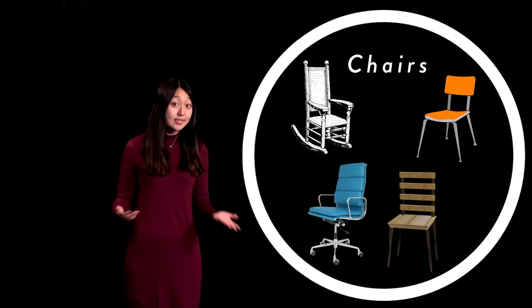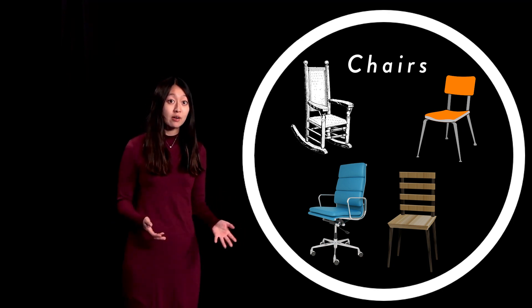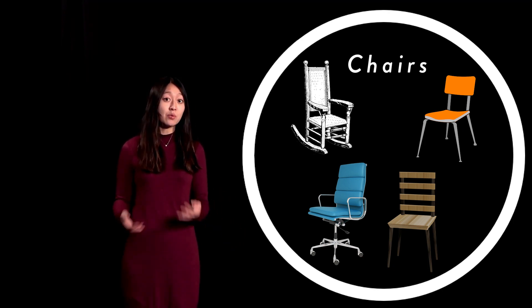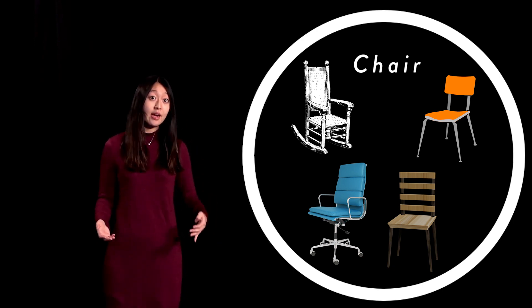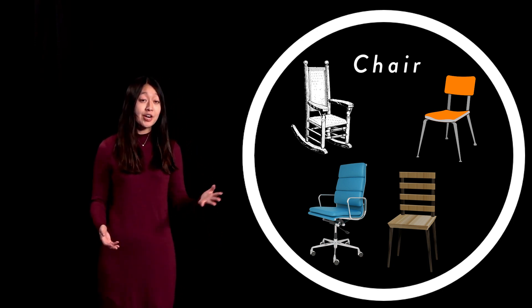For instance, the term chairs picks out the category chairs, which is just a collection of all the things in existence that have the property of being a chair. All of the chairs are members of the category chairs. To be specific, chair and chairs are the same category. They have all things in reality that are chairs as members.